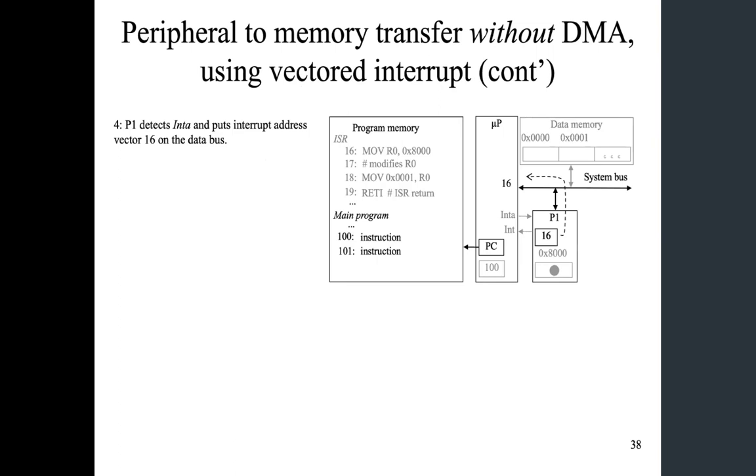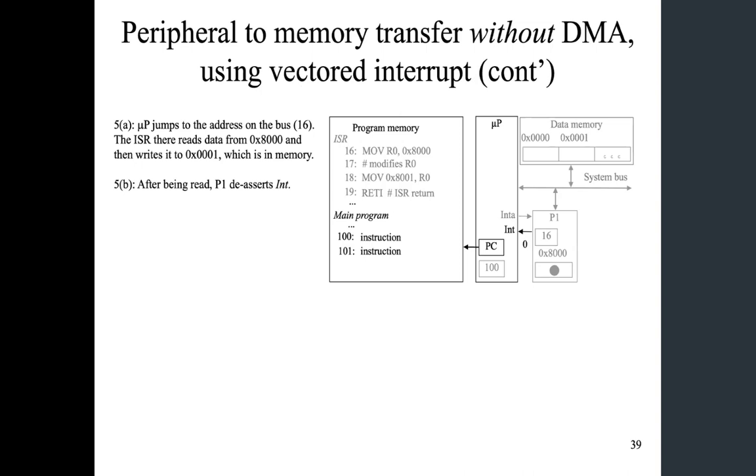We have interrupt acknowledgment. So the peripheral will send an interrupt vector number 16. And using that, the microprocessor will find where the ISR is, which is address 16. It will read data, modify data, and write the data to address 0001.